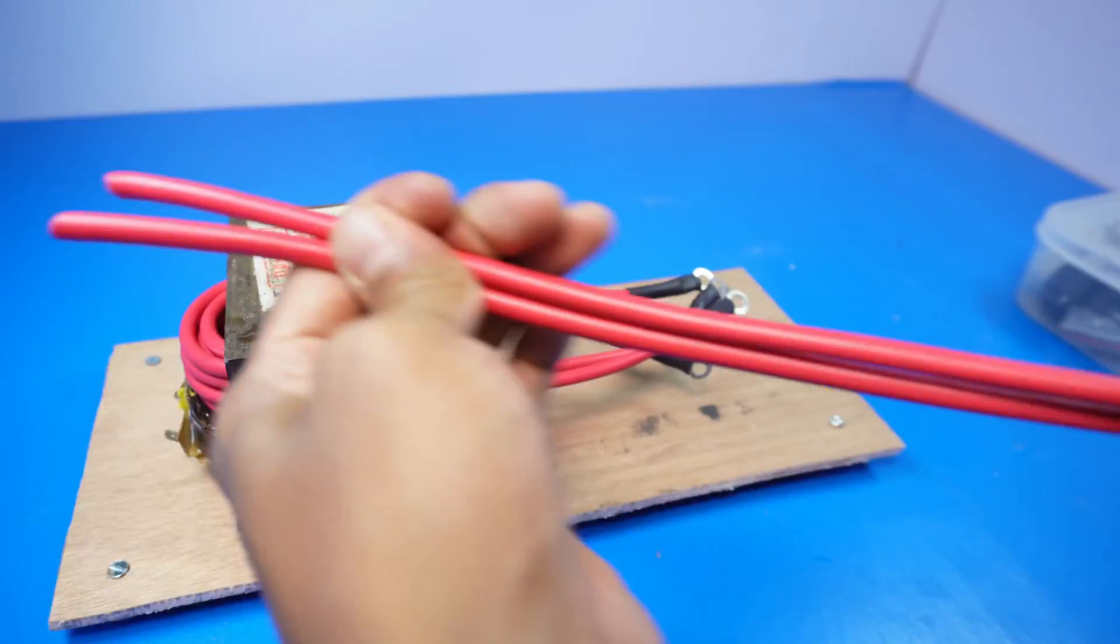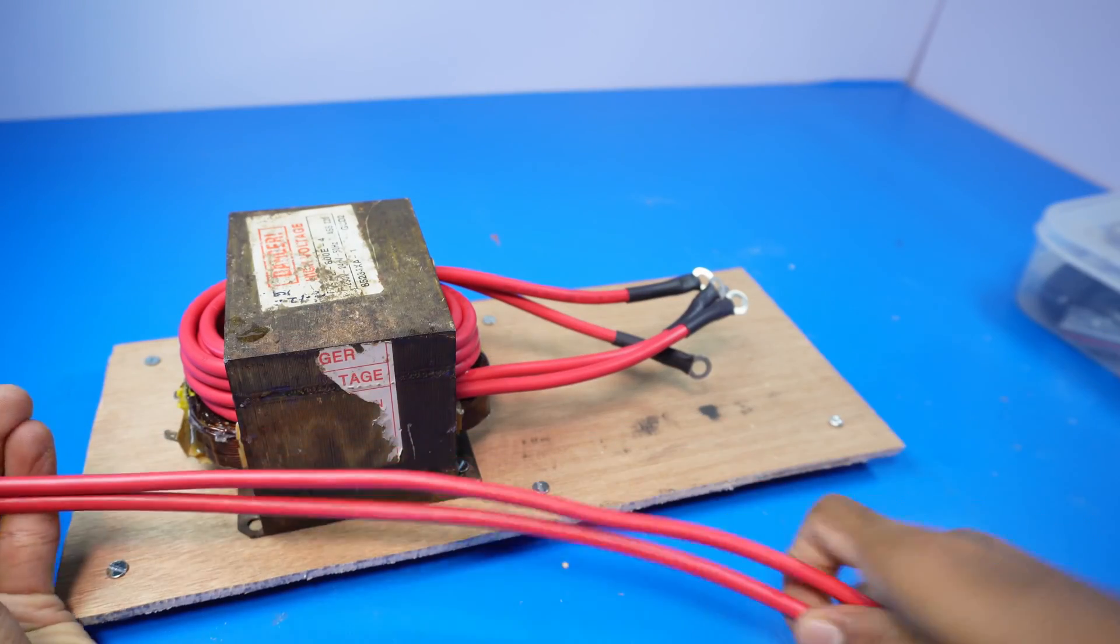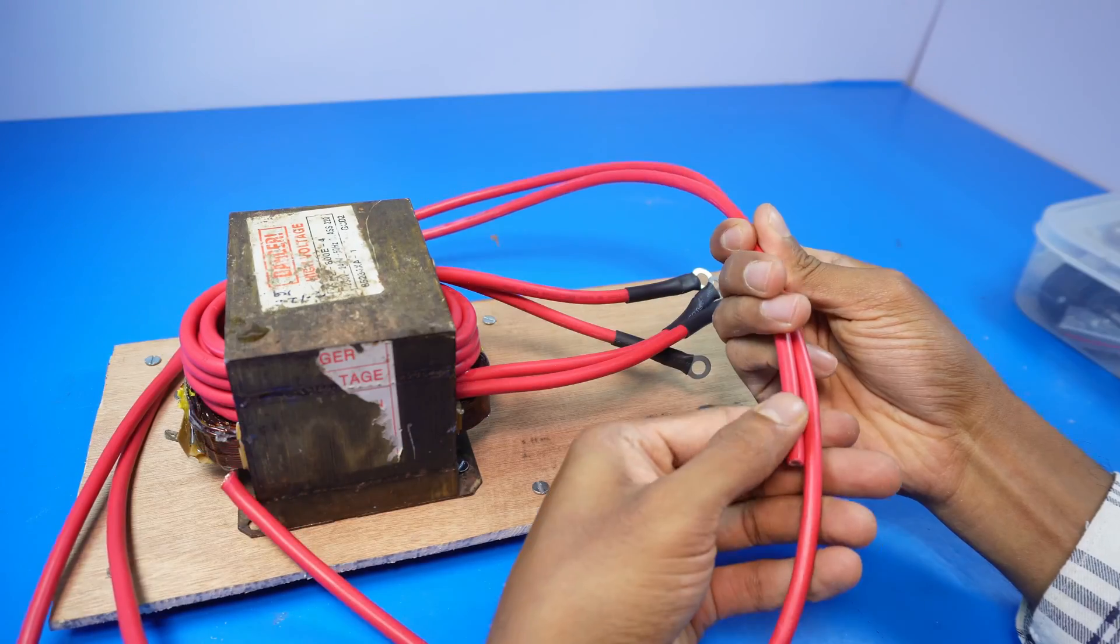Now, I have attached the transformer to the plywood sheet. You can cut the wires to any length you prefer.